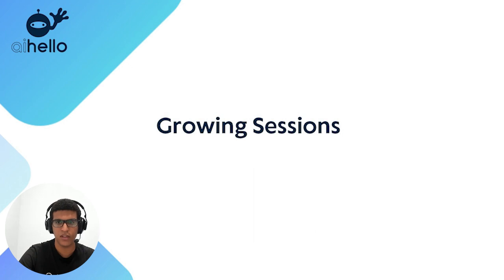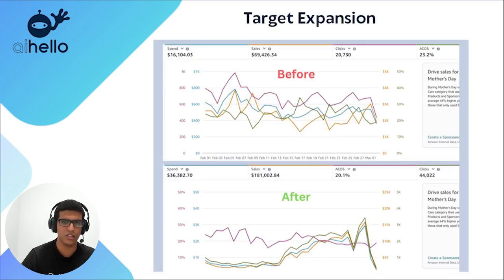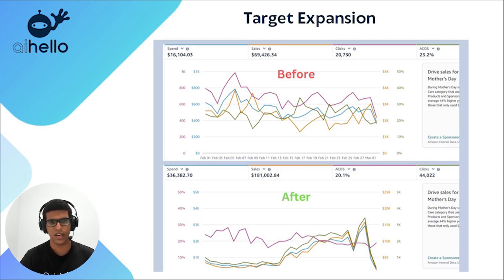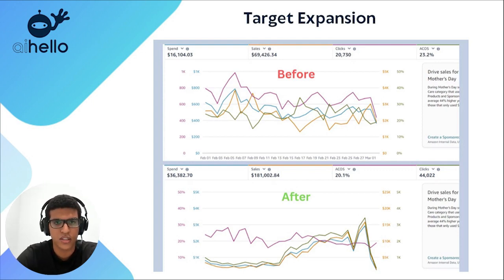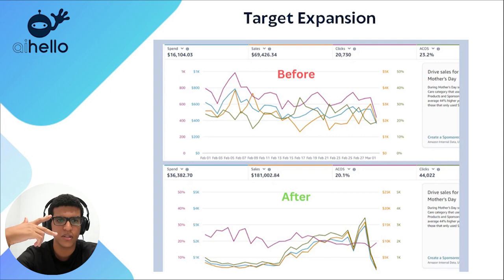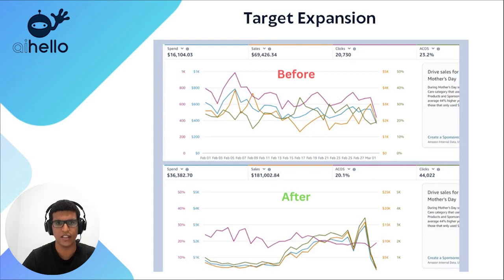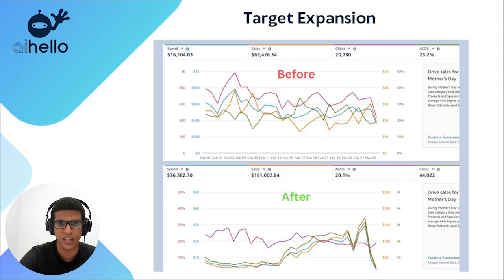The first metric is sessions. The first method to increase sessions is target expansion. I pulled up a before-and-after screenshot to illustrate this. In this account we worked on, they had much fewer targets — fewer keywords, fewer ASINs, and fewer match types. We fixed that by adding several thousand keywords. Looking at the actual stats, sales almost tripled from $69,000 to $181,000. Spend more than doubled, and clicks went from 21,000 to 44,000 — mainly through target expansion.